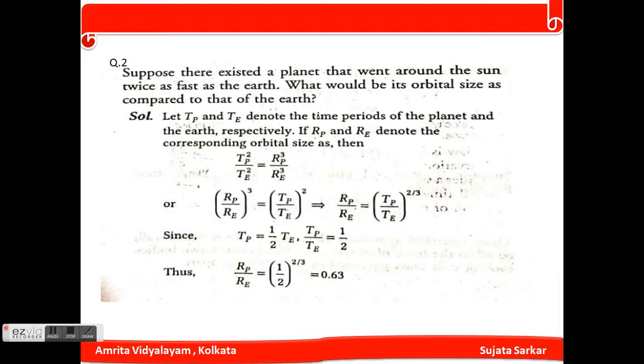Question number 2: Suppose there exists a planet that went around the sun twice as fast as the earth. What would be the orbital size as compared to the earth?